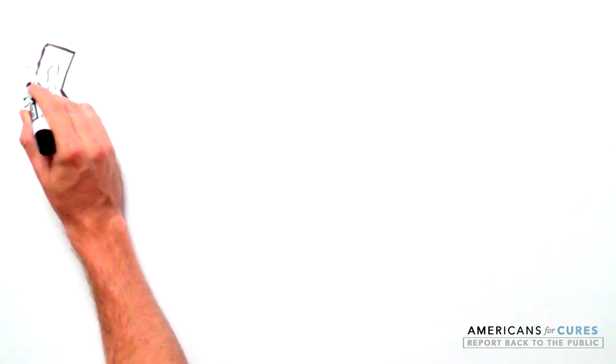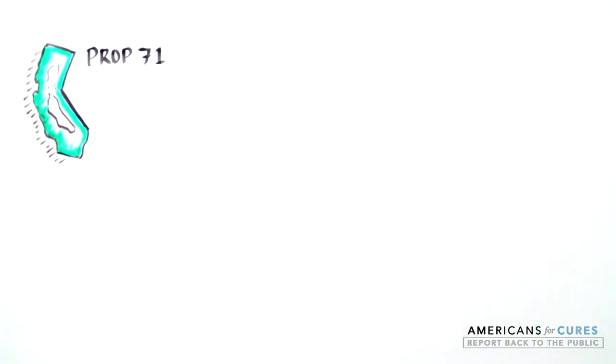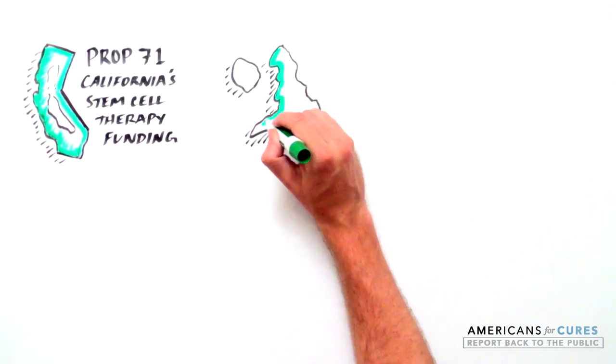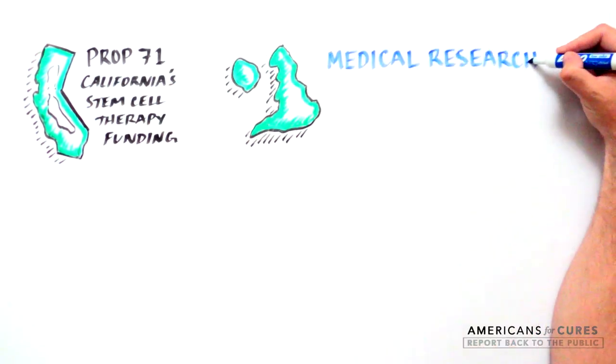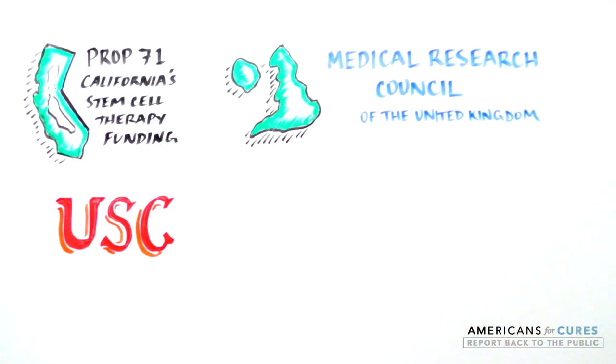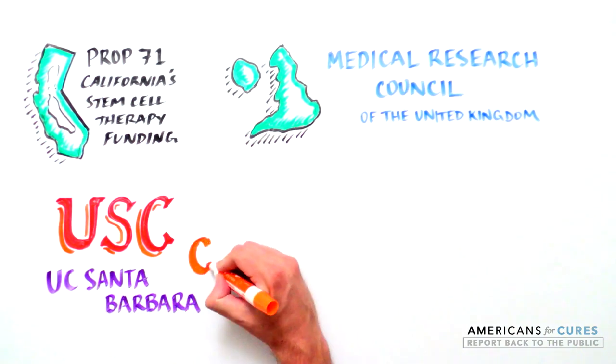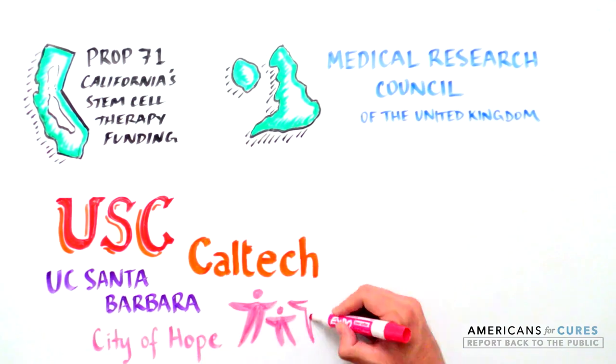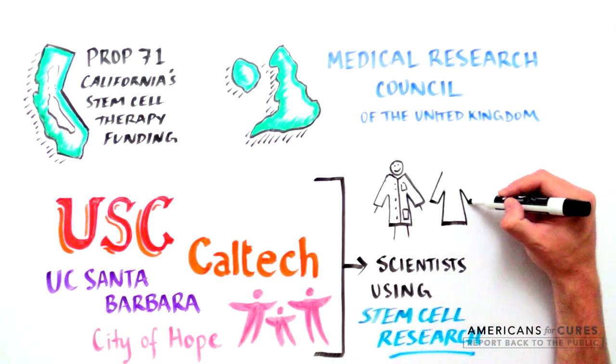Using California's stem cell therapy funding through Proposition 71, with the support of an international partnership with the Medical Research Council of the UK, a group of pioneering scientists at the University of Southern California, in collaboration with the University of California at Santa Barbara, Caltech, and the City of Hope are turning to stem cells to try to treat AMD.